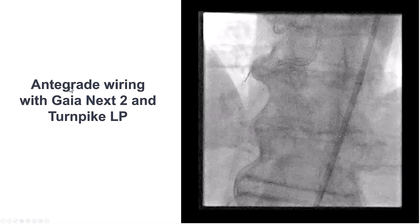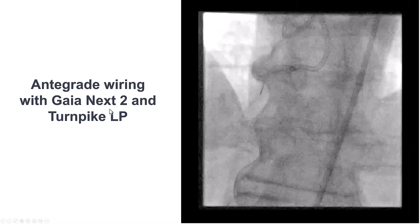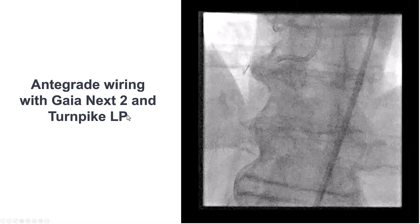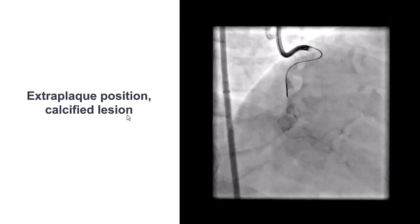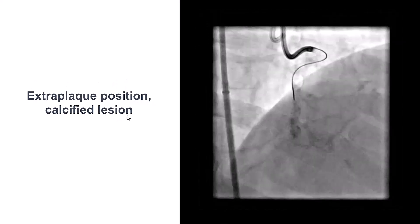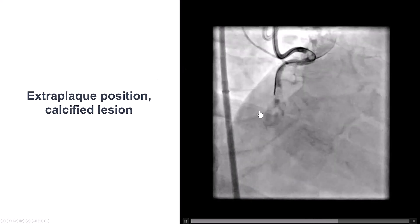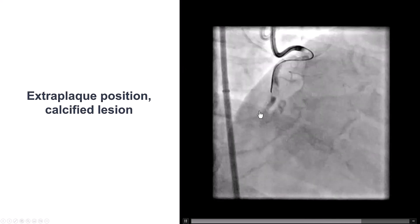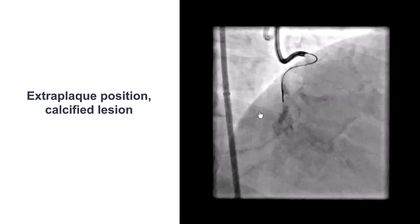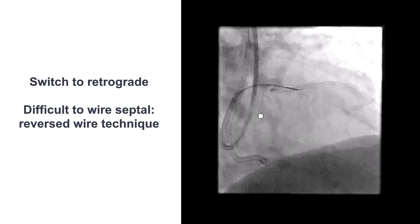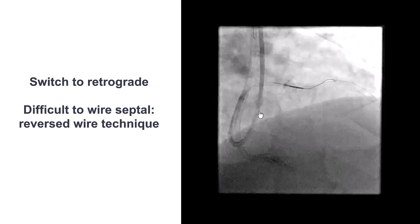We tried with a Gaia-next-2 wire and Turnpike LP microcatheter and made some progress, but the wire was actually in the extraplaque location. We tried different guidewires but had difficulty penetrating, so we decided to switch to the retrograde approach.